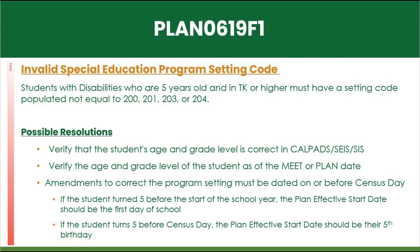Plan 0619: The program setting is incorrect for the student's age. If the student is 5 or older, they must be in a general education setting with percentage in general education reported.